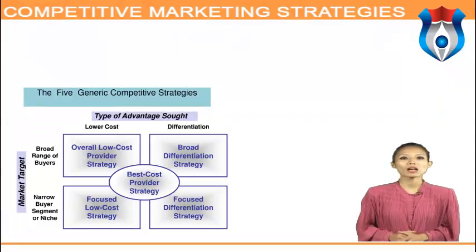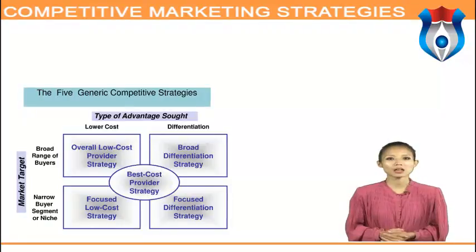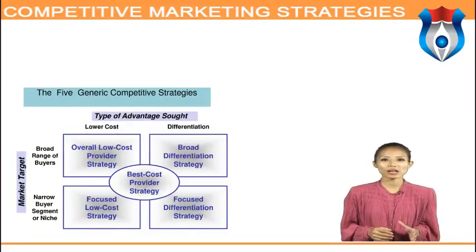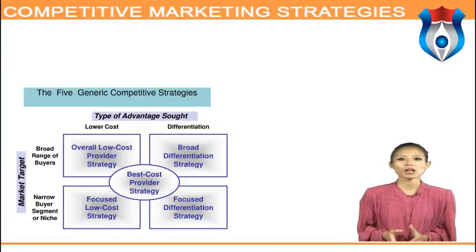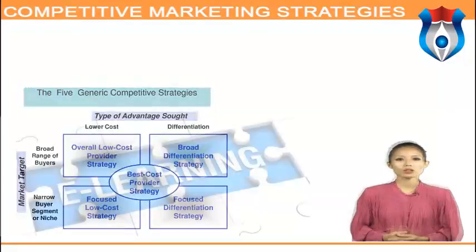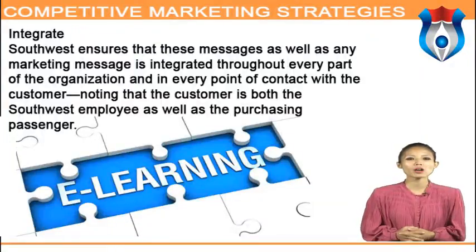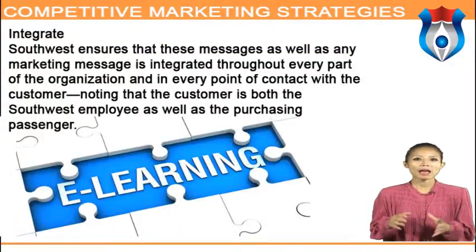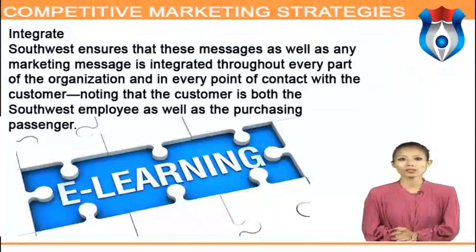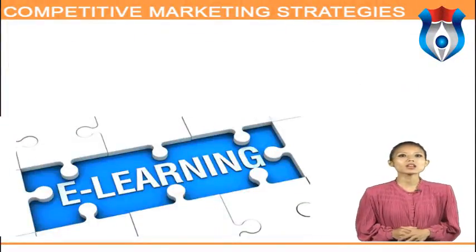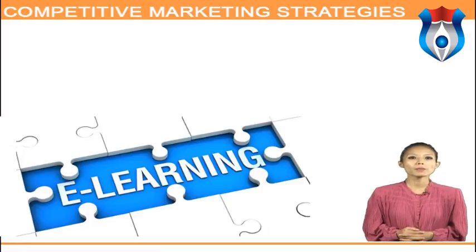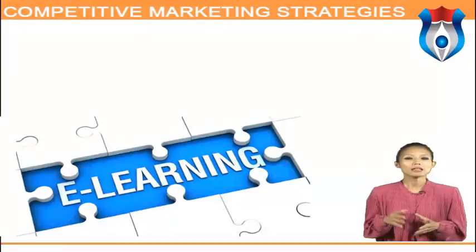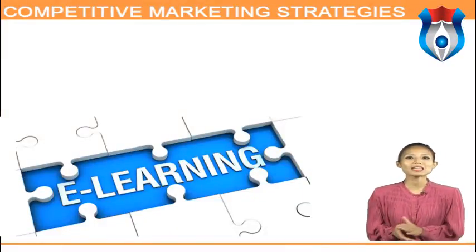Southwest Airlines has created a marketing organization with three company policies: practice the golden rule; make employees your first customers and passengers your second; and help each other out. Southwest ensures that these messages, as well as any marketing message, are integrated throughout every part of the organization and at every point of contact with the customer. This ability to create a marketing culture allowed Southwest to weather economic downturns and adverse industry trends. Becoming a marketing organization allows the entire team to understand the value of the firm's products and behave in a manner in which selling is a way of life.